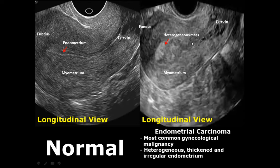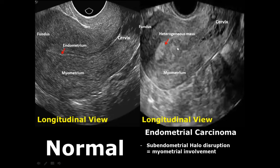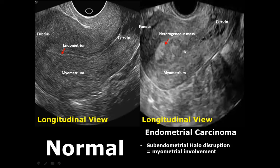Endometrial carcinoma is the malignant condition of the endometrium. It gives a heterogeneous appearance with thickened endometrium showing irregularities in texture. An important feature is disruption of the sub-endometrial halo — the hypoechoic area in the innermost layer of the myometrium right behind the endometrium. Disruption of this halo in endometrial carcinoma indicates myometrial involvement, meaning the carcinoma has reached the myometrium.